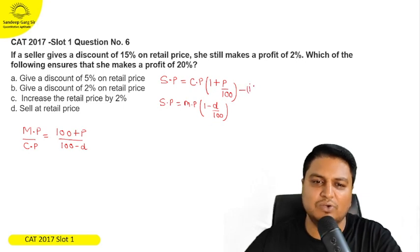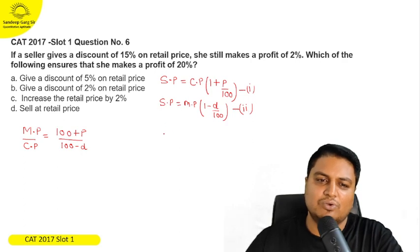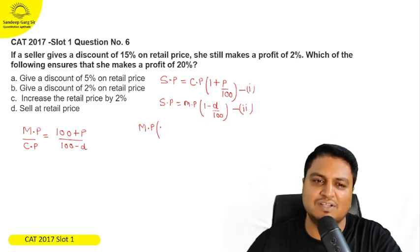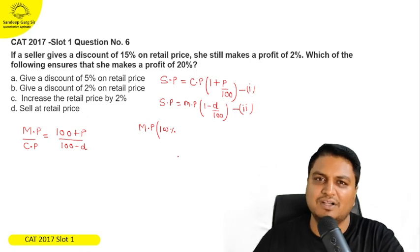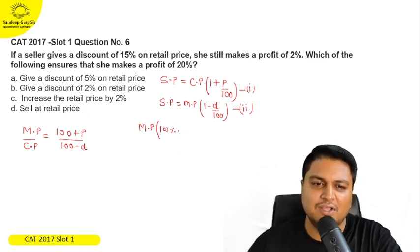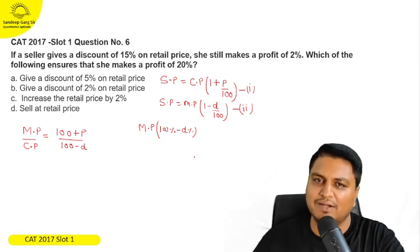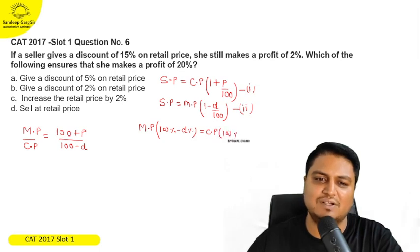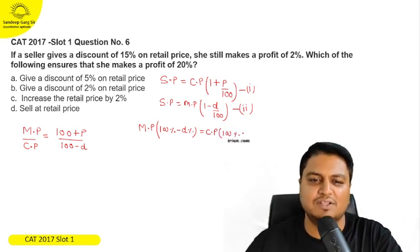So if we compare these two, equation number 1 and equation number 2, because both are selling price, we can compare them. First, I will write the second one. This is MP, 1 is nothing but 100 percent. I can denote it with 100 percent. 100 percent is nothing but 1, 100 by 100. And D by 100 is nothing but D percent.